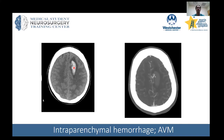One possibility is an arteriovenous malformation, abbreviated AVM. This is thought to be mostly congenital. Normally, arteries flow into capillaries where the arterial pressure gets dissipated, and then they coalesce to form veins to drain the blood. In an AVM, the artery runs directly into the vein without any intervening capillaries. All the arterial pressure is absorbed by a vein that wasn't built for it, and you can have rupture of those vessels and a bleed like this.